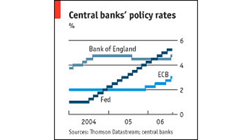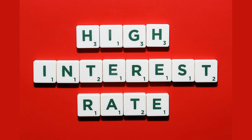4. Annual percentage rate (APR): The APR is the total cost of borrowing money, including interest and fees, expressed as an annual percentage rate. This rate is used to compare the cost of different loans. 5. Effective interest rate: The effective interest rate is the actual interest rate you pay on a loan, taking into account any fees or charges associated with the loan. Understanding the different types of interest rates can help you choose the right loan or investment for your financial goals.